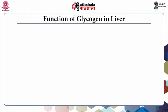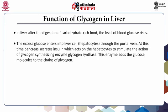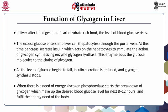Function of glycogen in liver: after digestion of carbohydrate-rich food, the level of blood glucose rises. The excess glucose enters liver cells (hepatocytes) through the portal vein. At this time, the pancreas secretes insulin, which acts on the hepatocytes to stimulate the glycogen-synthesizing enzyme glycogen synthase, adding glucose molecules to the glycogen chain. As glucose levels begin to fall, insulin secretion is reduced and glycogen synthesis stops. When energy is needed, glycogen phosphorylase starts the breakdown of glycogen to maintain blood glucose levels for the next eight to twelve hours.